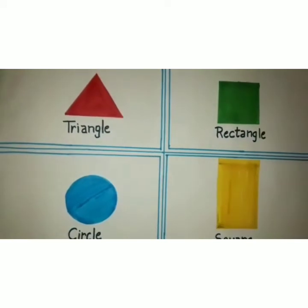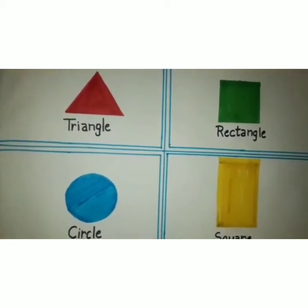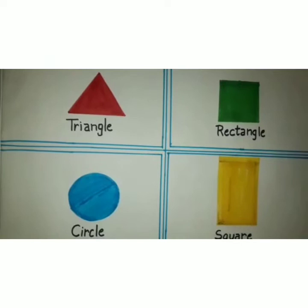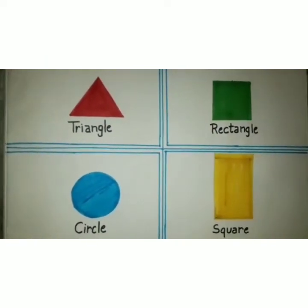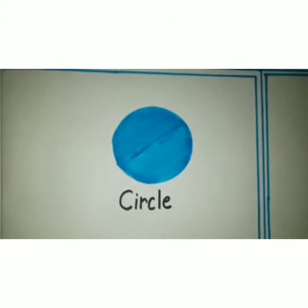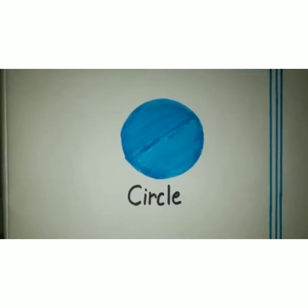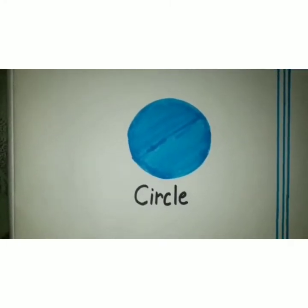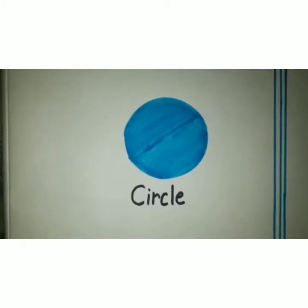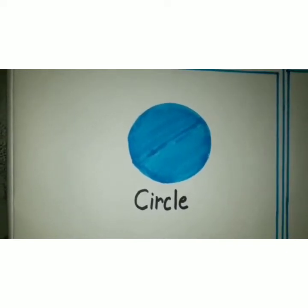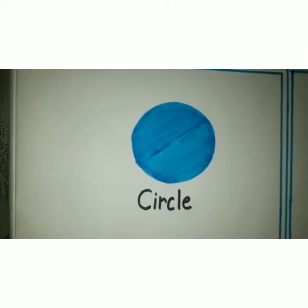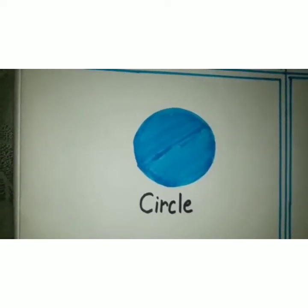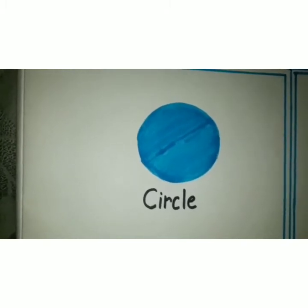My name is Roshan Rana from class 10. I would like to tell you about some properties of shapes. Firstly, we talk about the circle. A circle is a figure bounded by one curved line such that all straight lines drawn from a certain point within the circle to that line are equal, and that point is the center.